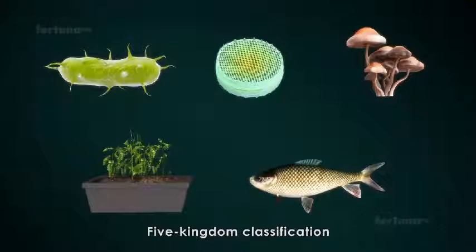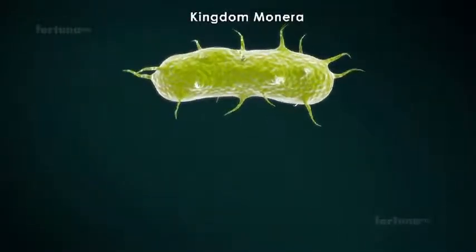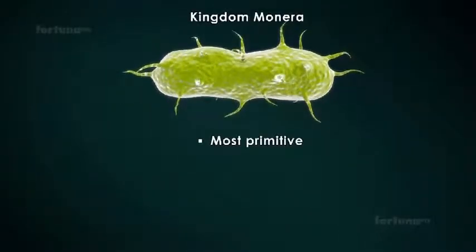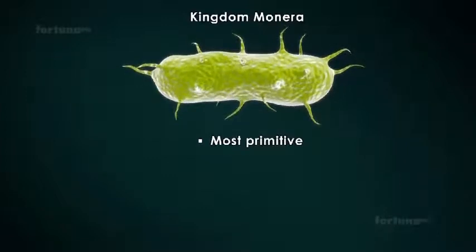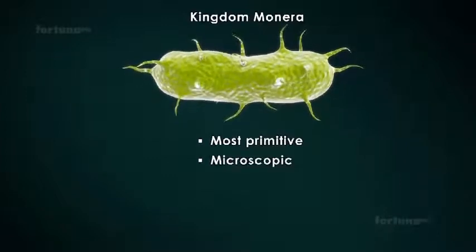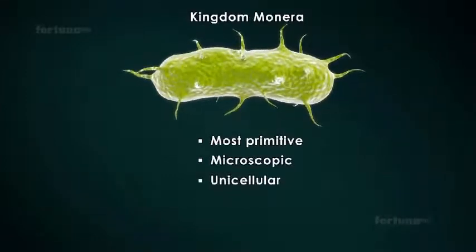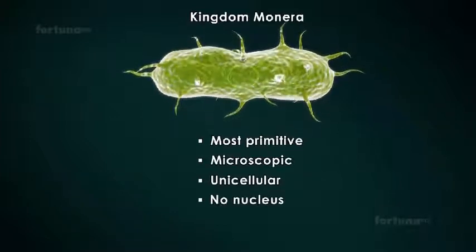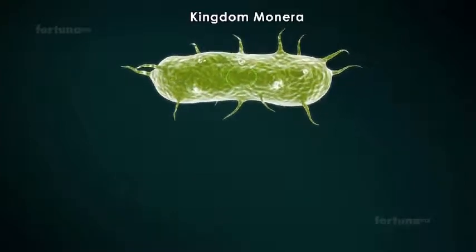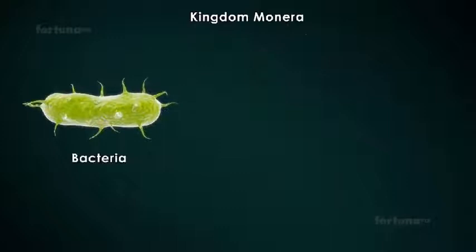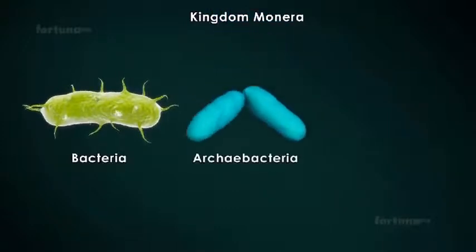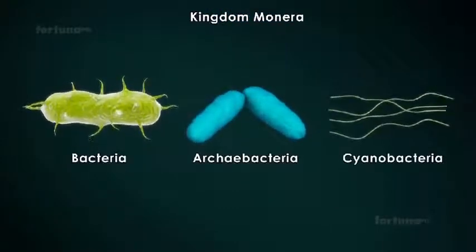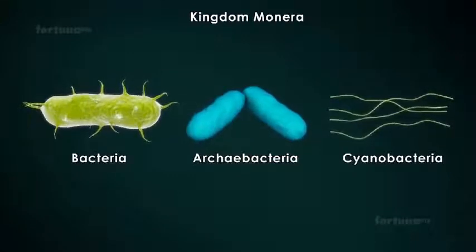Kingdom Monera consists of the most primitive life forms found on Earth. These organisms are usually microscopic and unicellular, meaning they are single-celled. They have no nucleus within their cytoplasm. Bacteria, Archaebacteria, and Cyanobacteria are all members of Kingdom Monera.